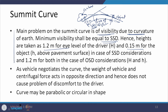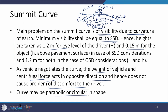When the vehicle negotiates the summit curve, the centrifugal force acts upwards while the weight acts downward. When the vehicle is at the top, weight and centrifugal force become opposite to each other, which means the effective weight acting downward reduces. As a result, the forces on the suspension system are also lesser, meaning discomfort to drivers or passengers is reduced. The summit curve can be parabolic or circular in shape.